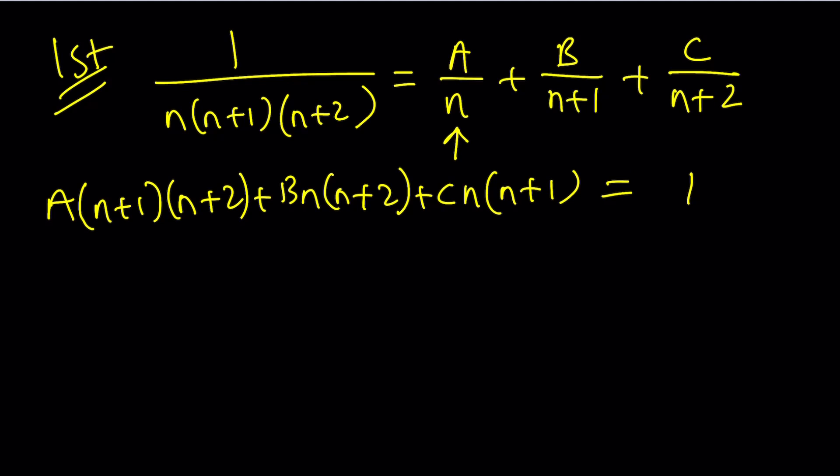So replace n with 0 on both sides. Of course, there's no n on the right-hand side, so whatever you replace n with, you're always going to get 1. Make sense? Yes, it's a constant. So when you replace n with 0, these two terms are going to disappear or vanish, a fancy term. And you're going to get A times 1 times 2, which is 2A equals 1. Beautiful. From here, we get A equals 1 half. Nice.